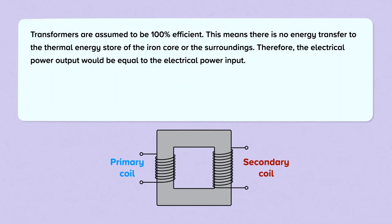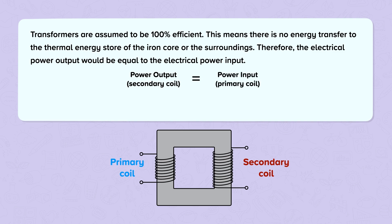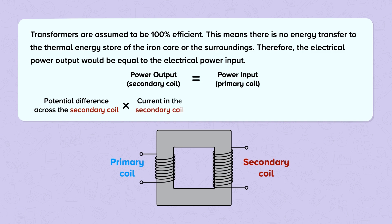Transformers are assumed to be 100% efficient. This means there is no energy transfer to the thermal energy store of the iron core or the surroundings. Therefore, the electrical power output would be equal to the electrical power input. Power output across the secondary coil would be equal to power input across the primary coil. We can calculate this with the formula: potential difference across the secondary coil multiplied by the current in the secondary coil is equal to potential difference across the primary coil multiplied by the current in the primary coil.